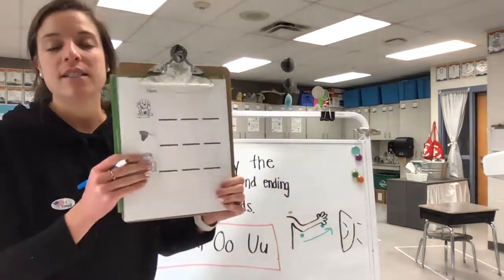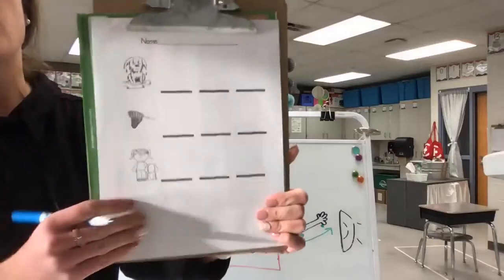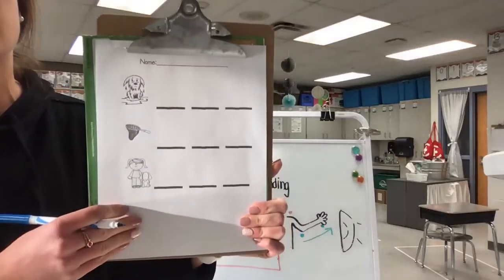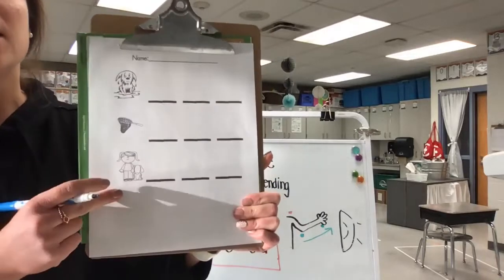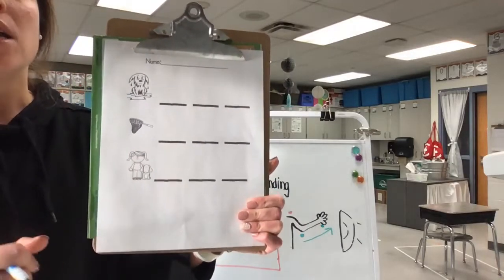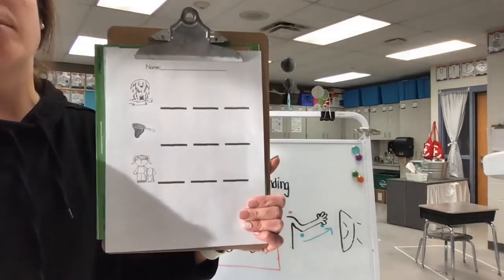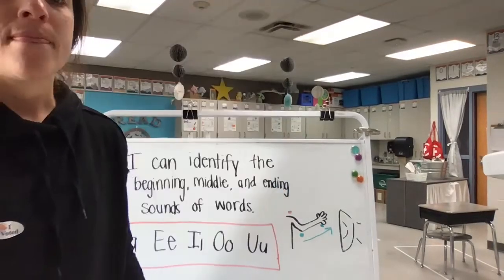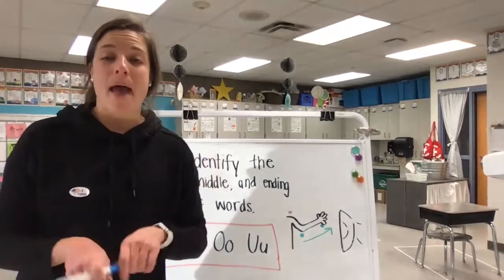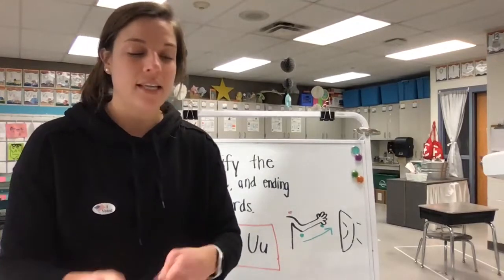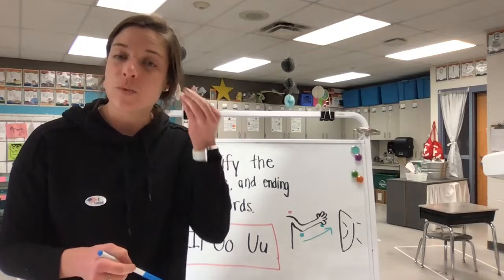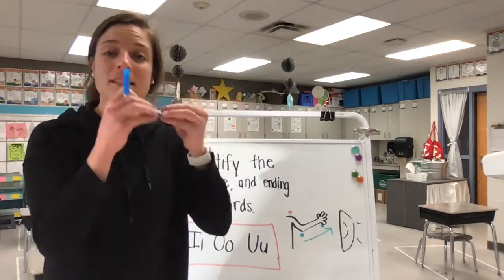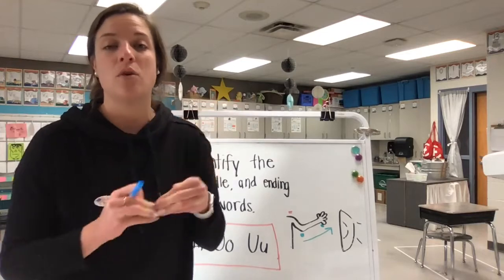So for our lesson today you will just need your phonemic awareness activity sheet that looks like this with a picture of the dog that's wet with a net and the girl with a pet. So go ahead and pause the video and grab the materials that you need. All right friends, welcome back. Today we're going to practice writing three-letter words, and we're going to do that by listening to our letter sounds and then connecting those and knowing what letters make those sounds.